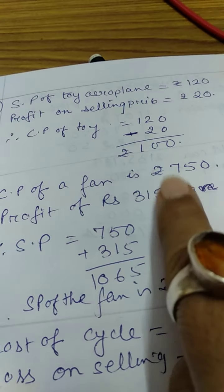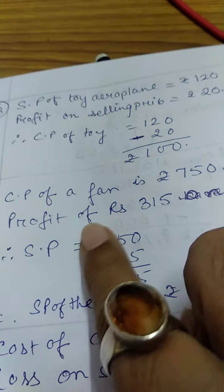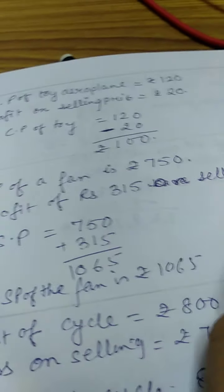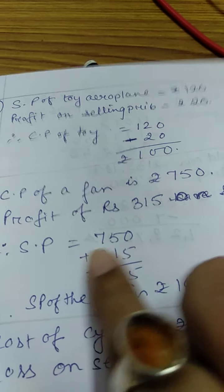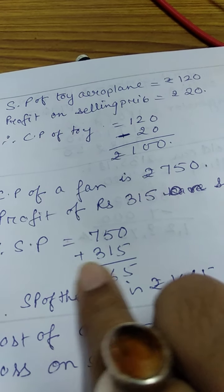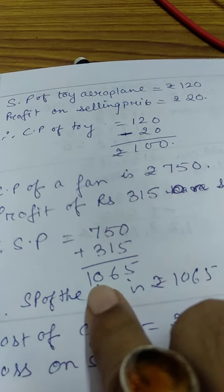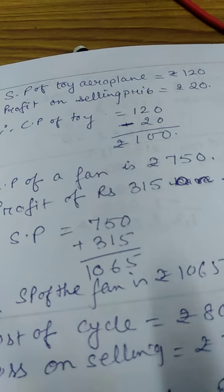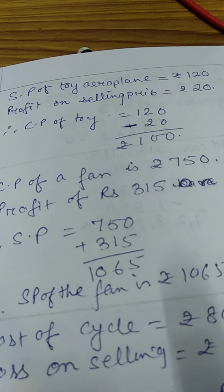Again, CP of the fan is Rs. 750. Profit of Rs. 350 on selling price. So, SP is Rs. 750. Profit is Rs. 350. So, we add it and we get Rs. 1065 is the SP of the fan.